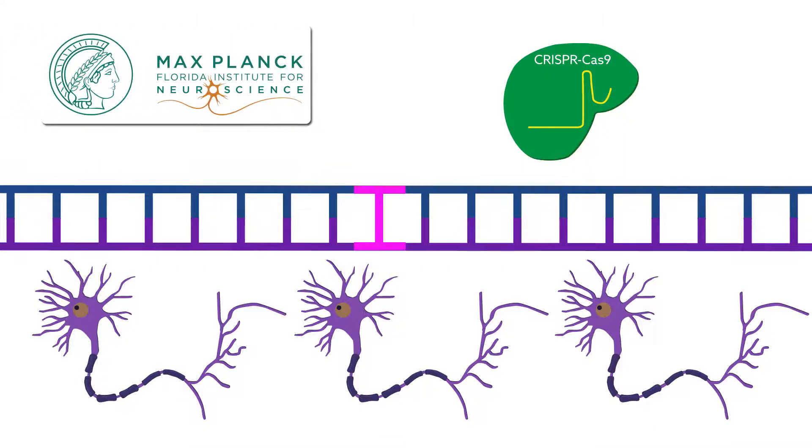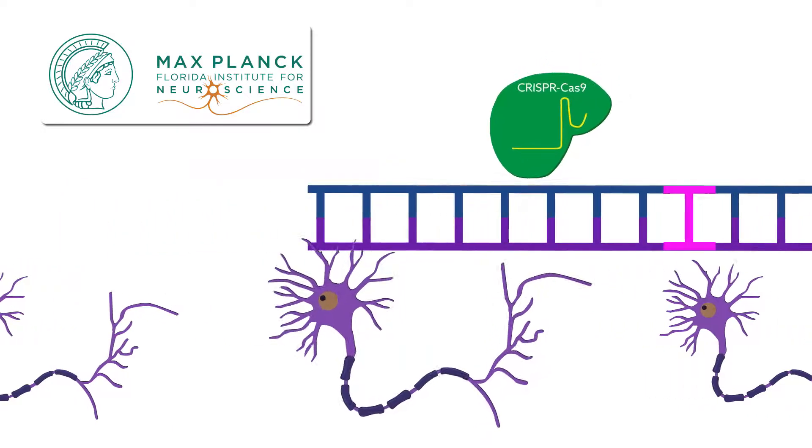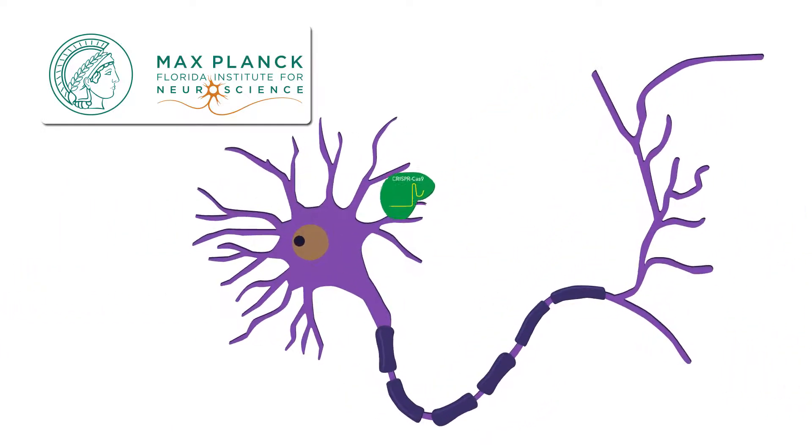But now, a group at the Max Planck Florida Institute for Neuroscience has figured out a way to make CRISPR work in these cells, opening up new possibilities for the field.